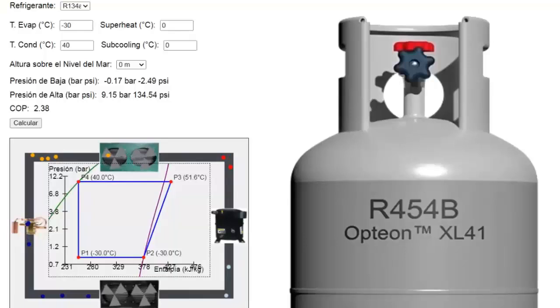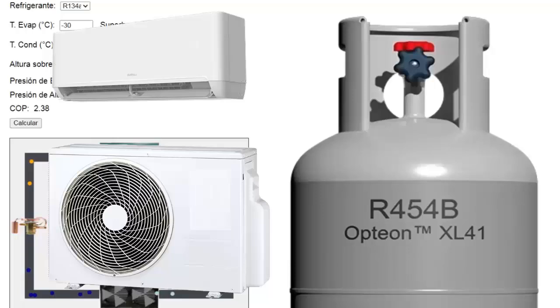R454B is a refrigerant that is starting to be used in air conditioning systems as a replacement for R410A in the manufacturing of new equipment. Next, we'll observe the behavior of R454B within the cooling cycle.